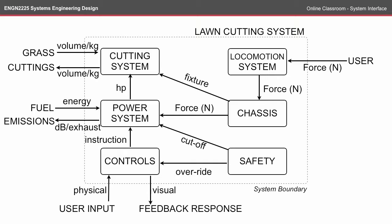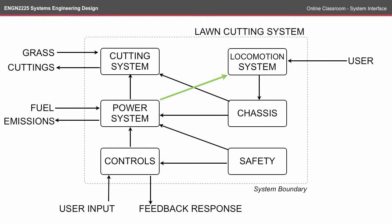One interesting extension you might look at in your exam or in your individual research paper is how these relationships could be changed and you would end up with a completely different design. For example, if we were to introduce a relationship between the power system and the locomotion system, you might then have a mower that had some sort of locomotion from the power system. Likewise, you could get rid of the user input into the locomotion system and that could be done through controls, giving a system where the control system directly influences the locomotion system and takes the user input out of the locomotion system completely. The important thing to highlight is that the relationships define how your system is going to operate, and by changing these relationships, you change the way and intention of your design.